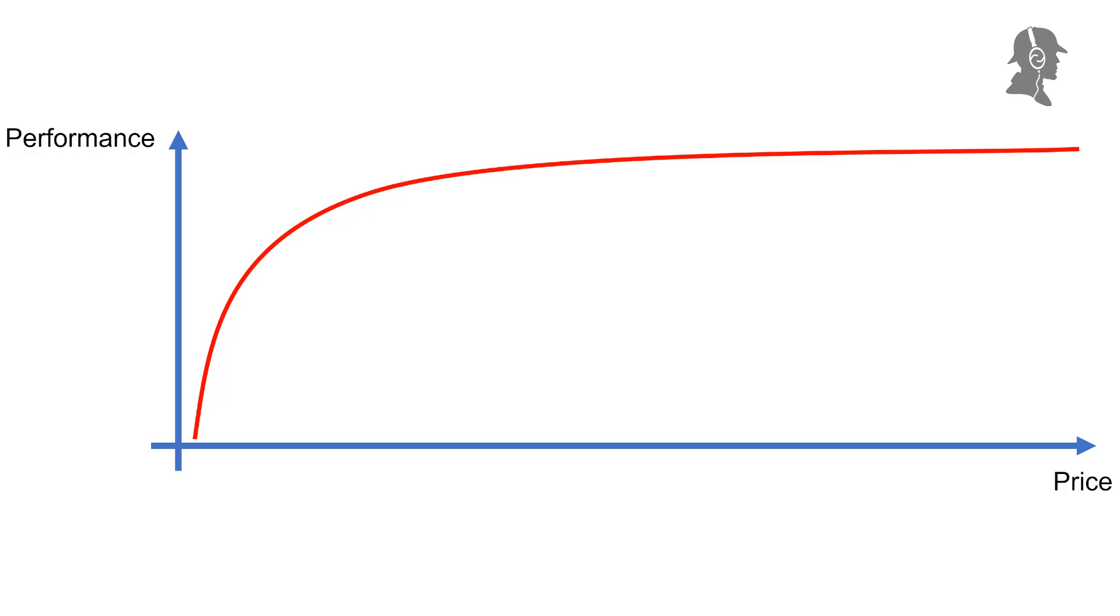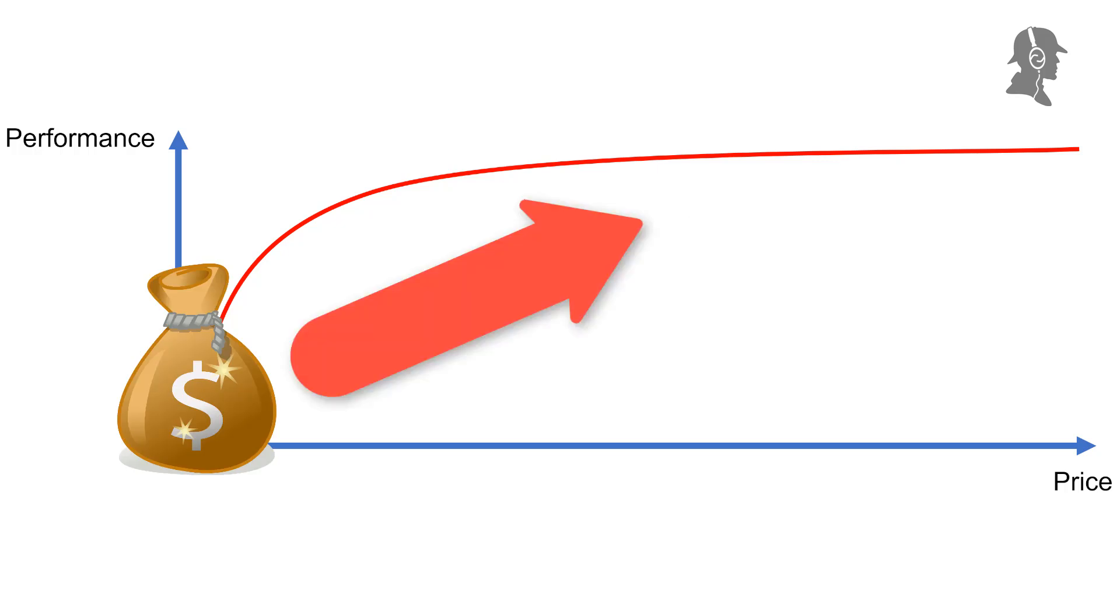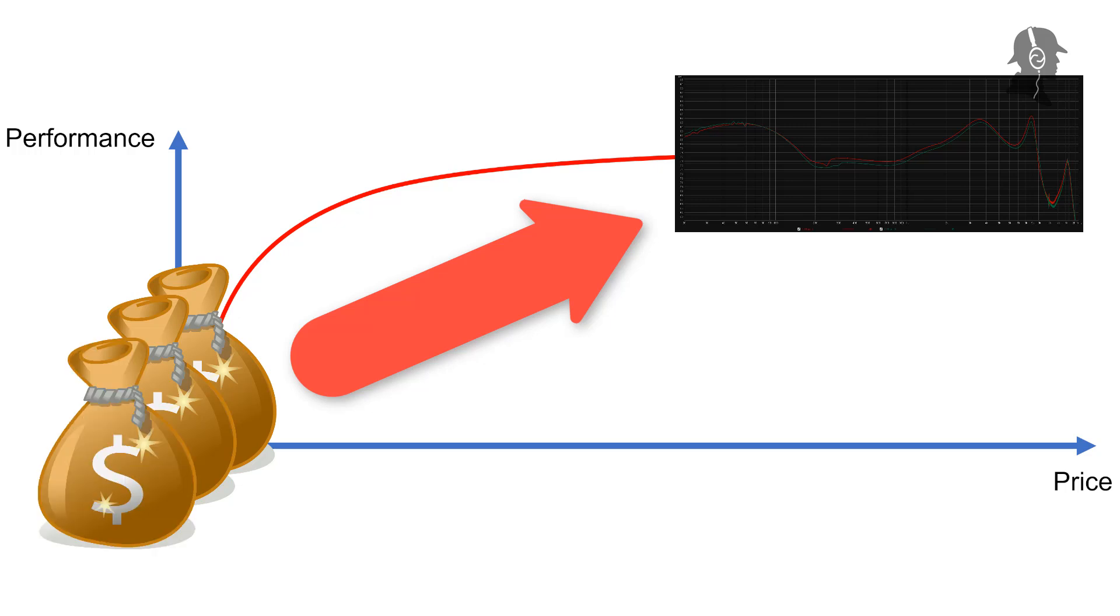That's the gist of diminishing returns if we just look at how much you get. We don't look at the relativeness, like how much you put in, how much you get out, because that wouldn't be a reducing curve. We just look at how much performance you get, specifically in audio here. This is just through the lens of audio what we are looking at.